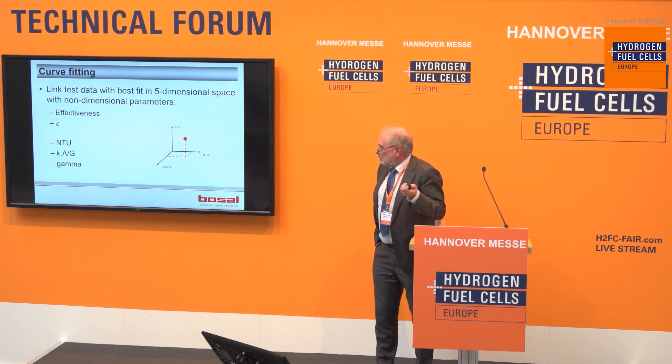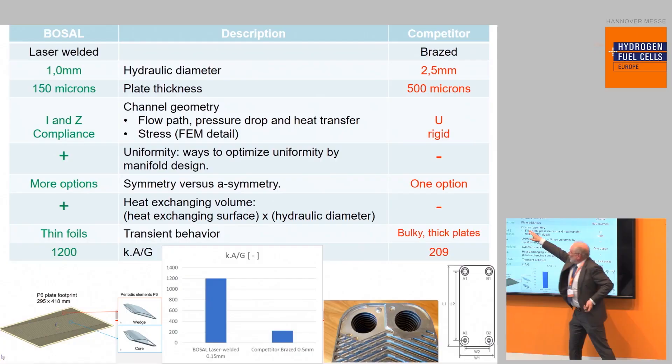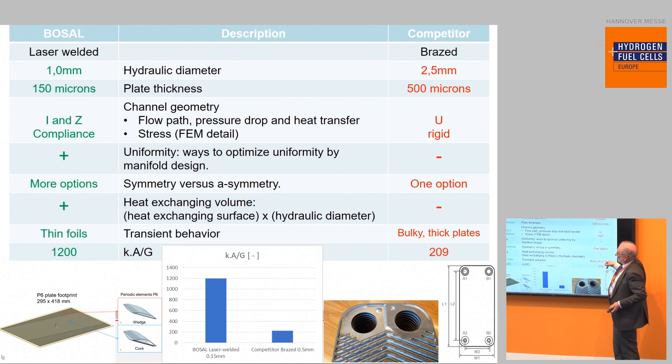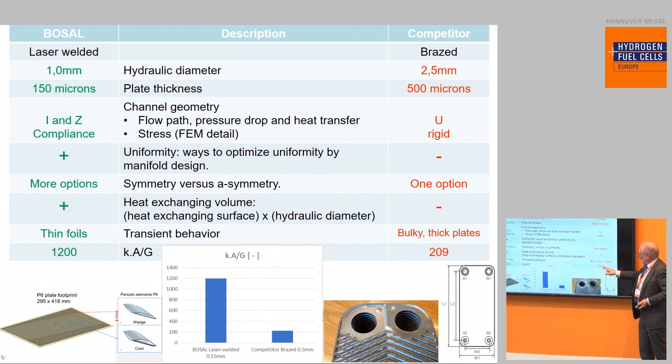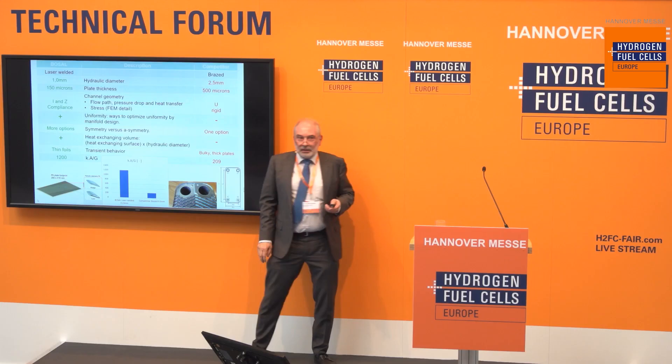Here is a comparison. You have a laser welded heat exchanger from Bozo and a brazed one from a competitor. Because we have a lower hydraulic diameter, thinner material, better flow distribution, better uniformity, and thin foils, we get a quality factor of 1200 while the competitor measures 209. So you see a factor of six difference.